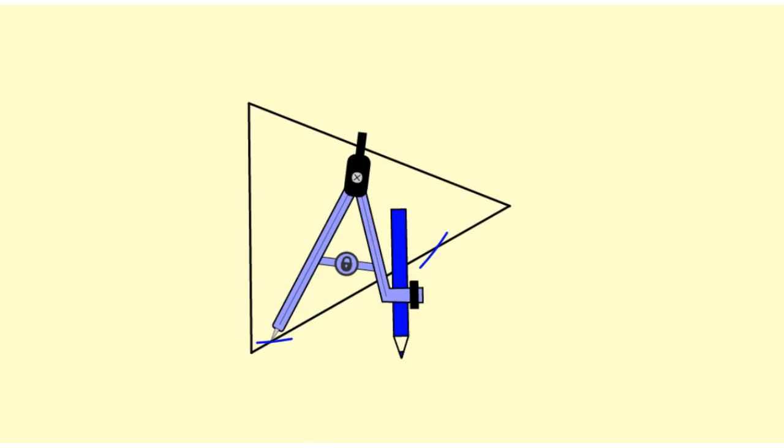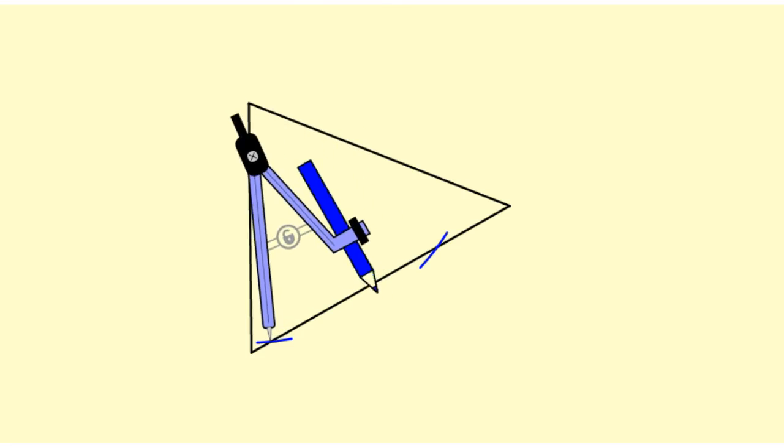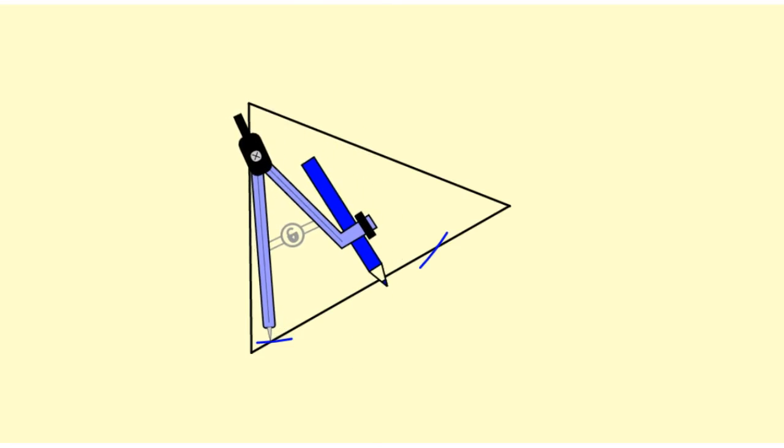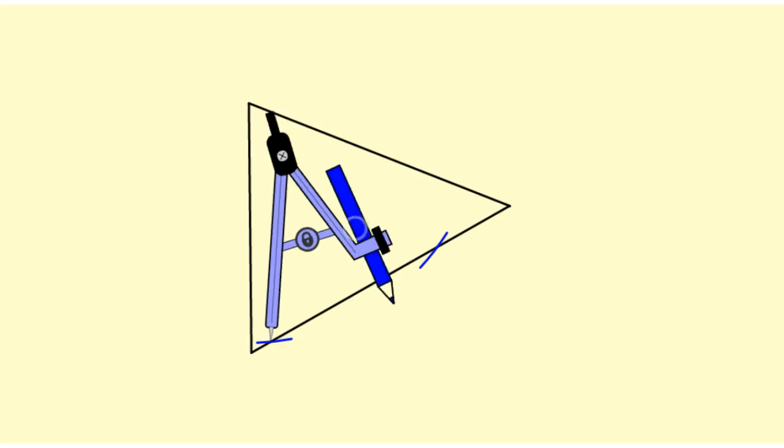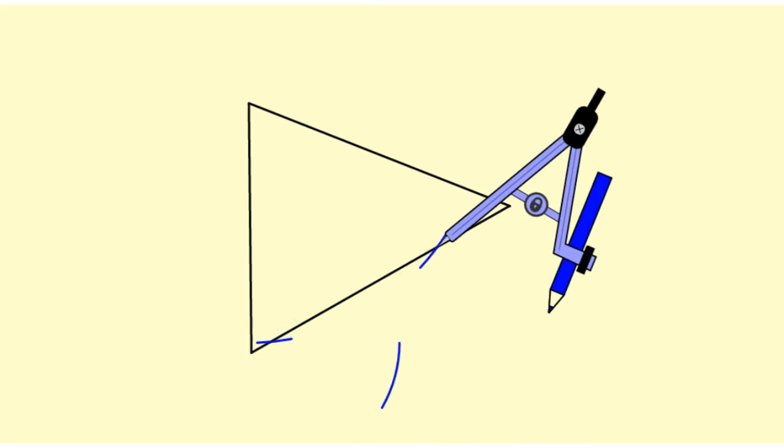Now I'm going to take my compass and put it on each of those points of intersection, and I can adjust the compass. I can open it or close it further. What has to be true is that it has to be over halfway between the two intersecting arcs. So with that in mind, I'm going to draw an arc from one side and an arc from the other side.